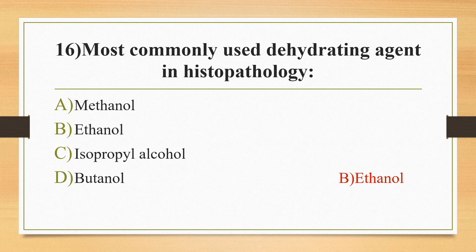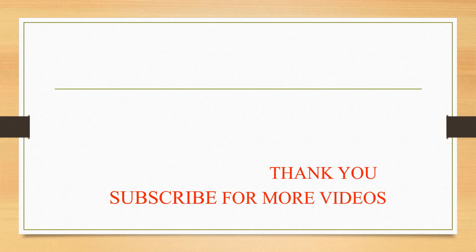Sixteenth question: the most commonly used dehydrating agent in histopathology — option A methanol, option B ethanol, option C isopropyl alcohol, option D butanol. The answer is option B, ethanol, which is the commonly used dehydrating agent in histopathology. Dehydration is the process of removal of water from tissue.